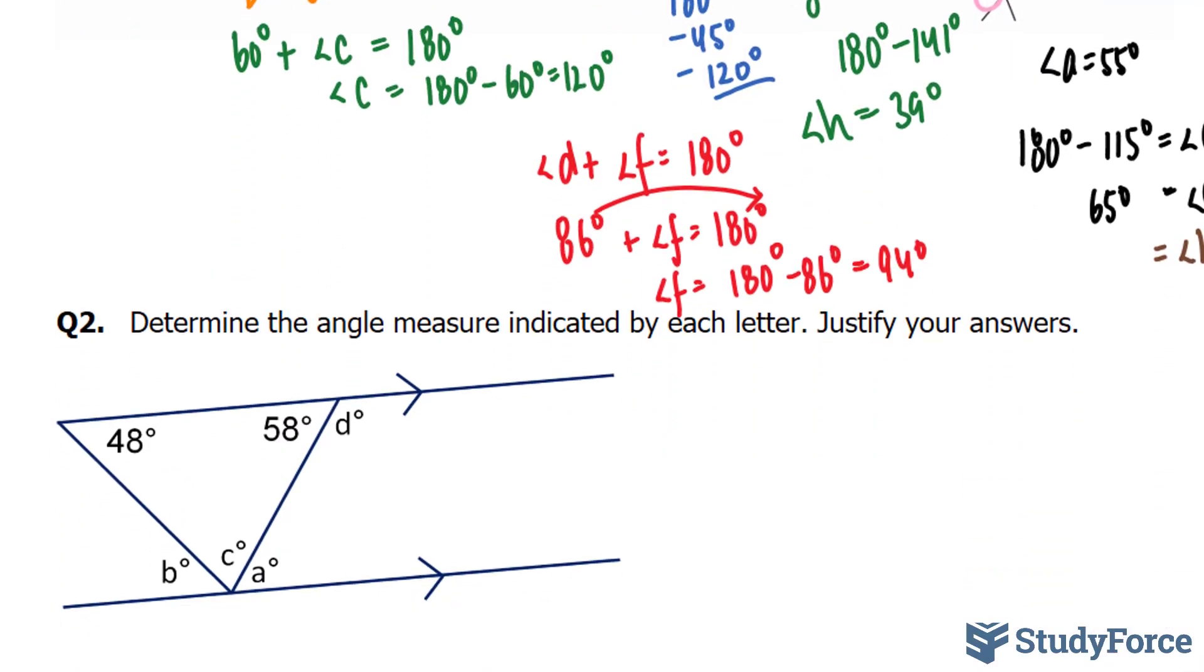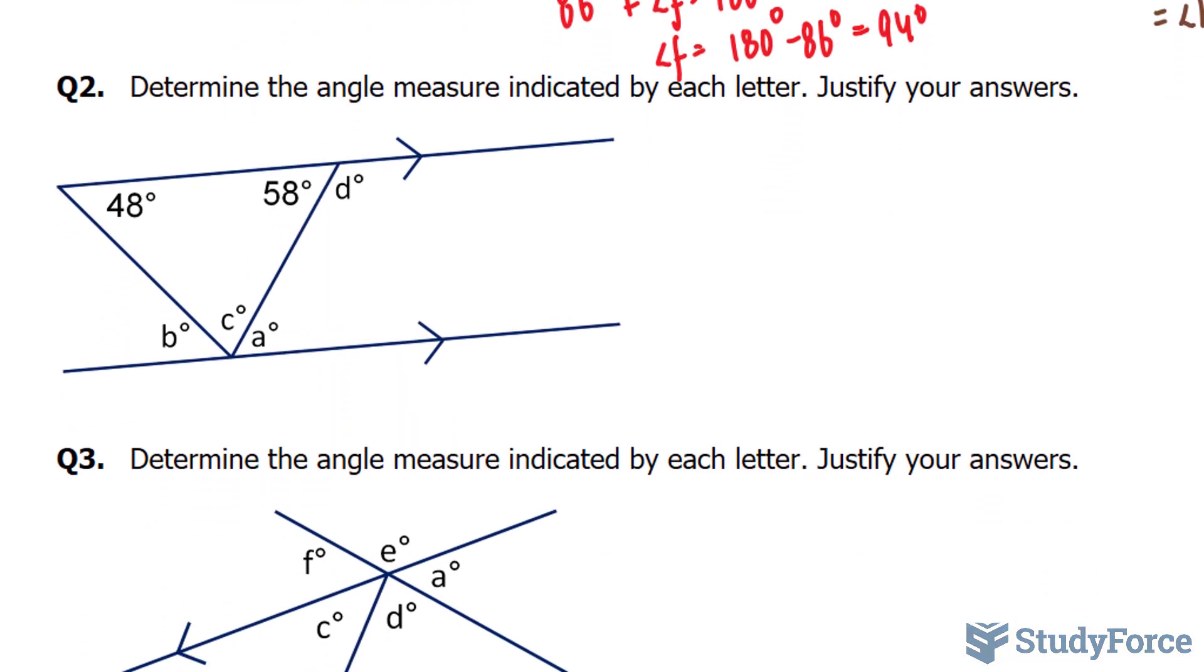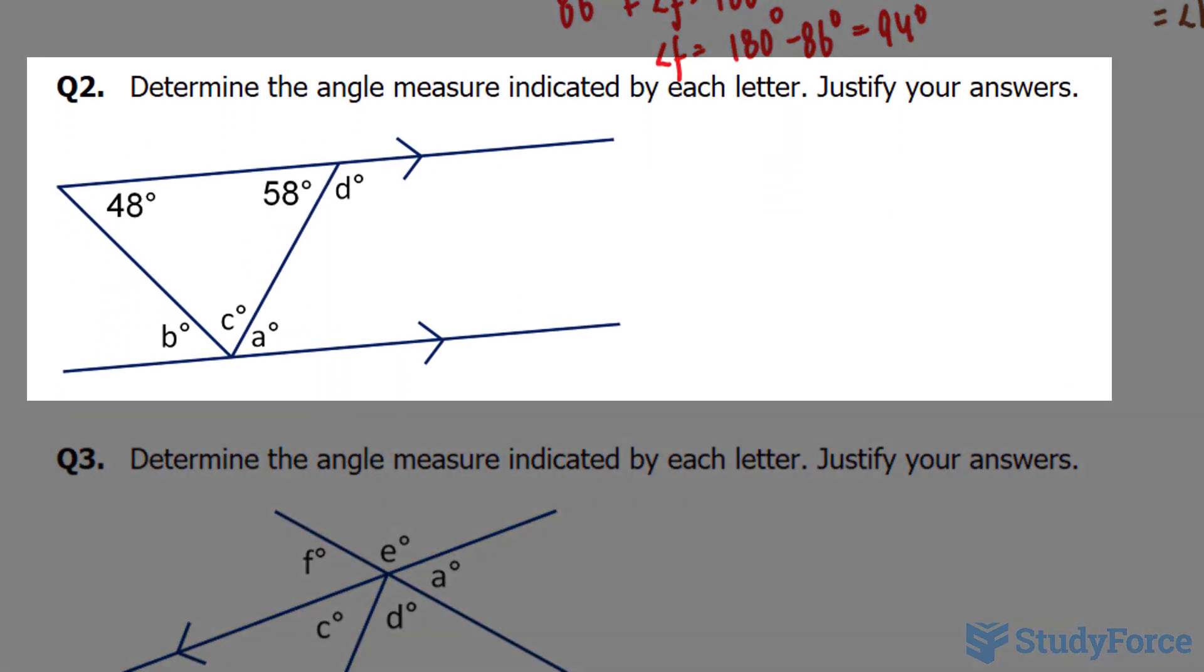In part 2 of this lesson, we'll continue where we left off. When we left off with question 2, we're asked to determine the angle measure indicated by each letter. So we have A, C, B, and D.